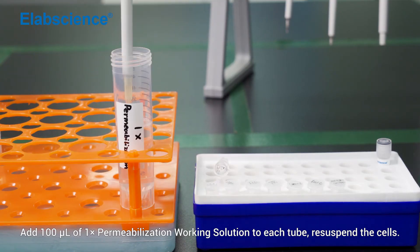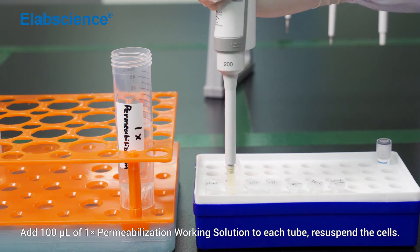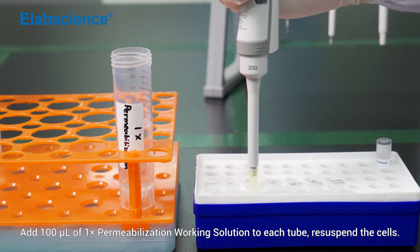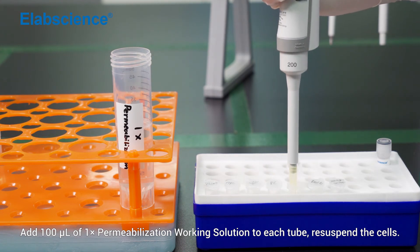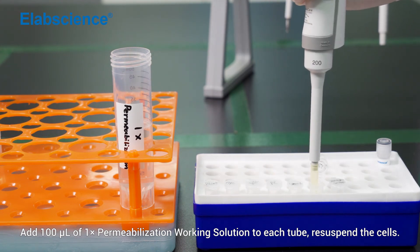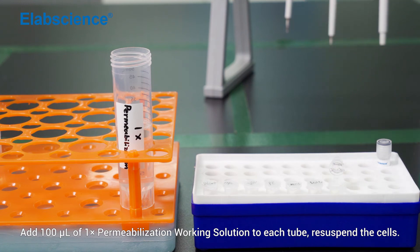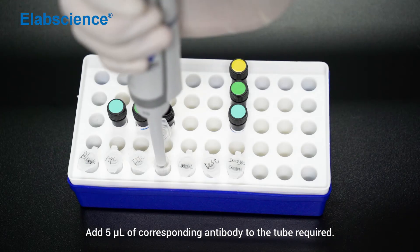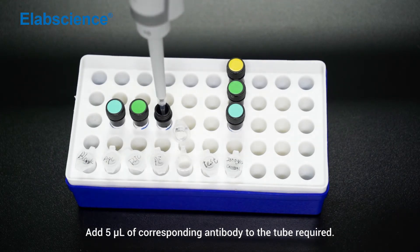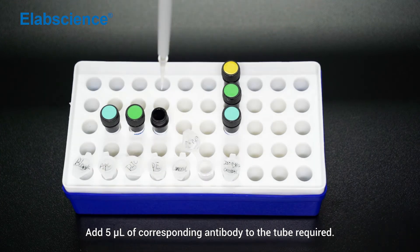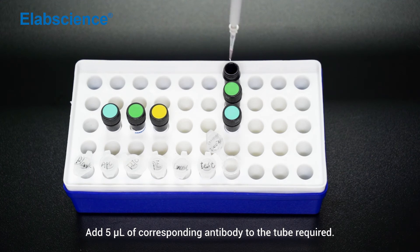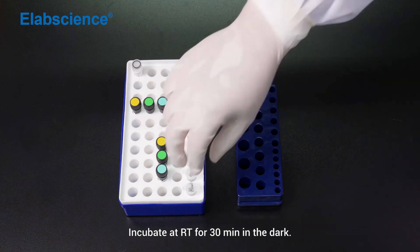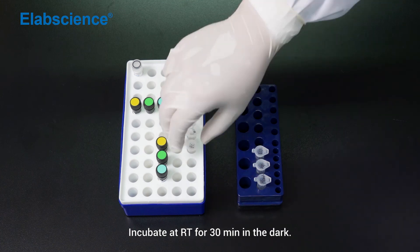Add 100 µL of one-time permeabilization working solution to each tube. Resuspend cells. Add 5 µL of corresponding antibody to the tube required. Incubate at room temperature for 30 minutes in the dark.